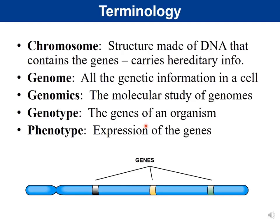A genome is all of the genetic information in the cell. The first organism to have its genome mapped was E. coli. The human genome was completed in 2003, but just knowing the sequences isn't enough — a lot of work has gone into determining what those sequences actually do. Genomics is the molecular study of genomes, essentially the sequencing of the genome.